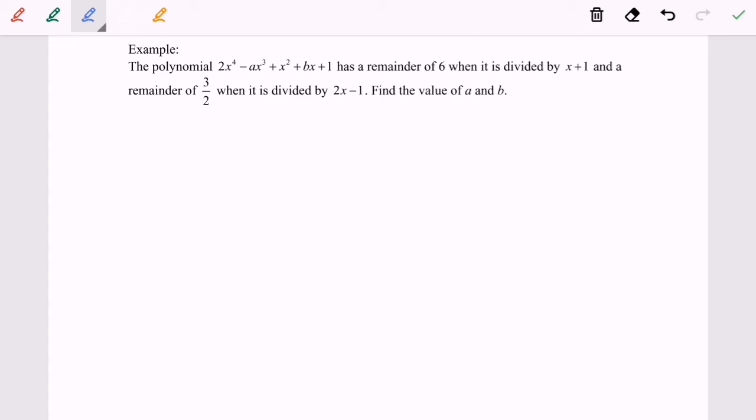Hello everyone, so now I'm going to discuss an example for the remainder theorem. The polynomial given has a remainder of 6 when it is divided by x plus 1, so we will have P(-1) equals 6. That is the first information given.